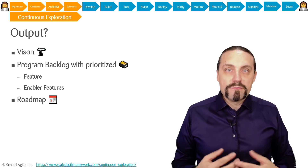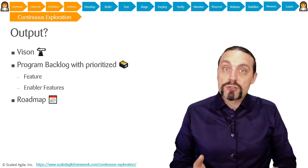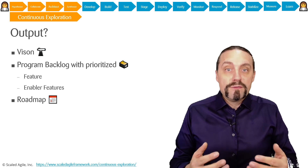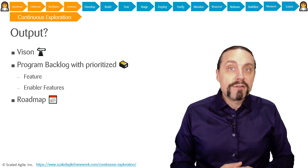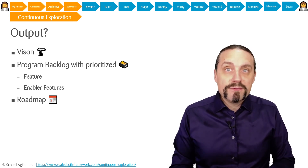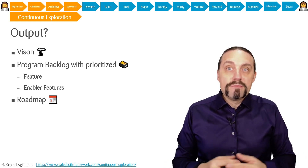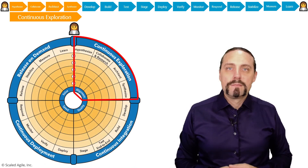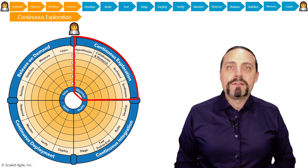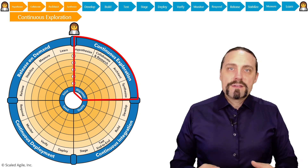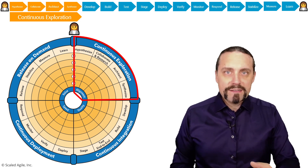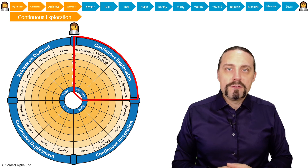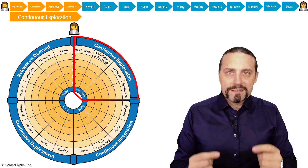The output of continuous exploration is exactly the output of synthesize. After continuous exploration we have a clear vision — or an adapted or changed vision, or perhaps we don't need to change the vision at all. We have a clear set of features brought into our prioritized program backlog, including enabler features for the architectural runway which enables us to bring more business value. And we have an adapted or new roadmap. Continuous exploration is all about getting alignment between the different stakeholders so that we identify which hypotheses should be evaluated to bring the biggest value — so that we are able to build the right thing right.